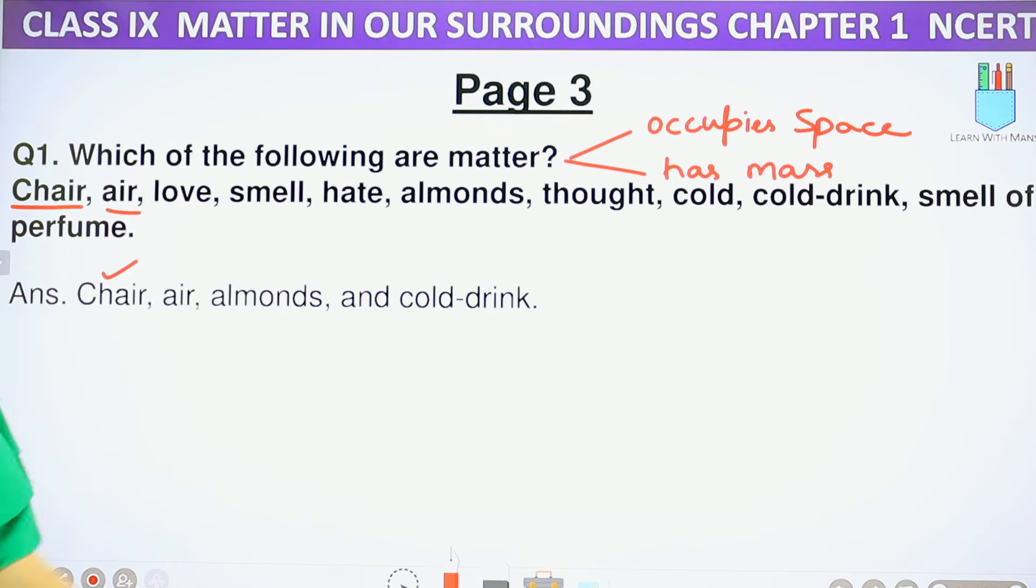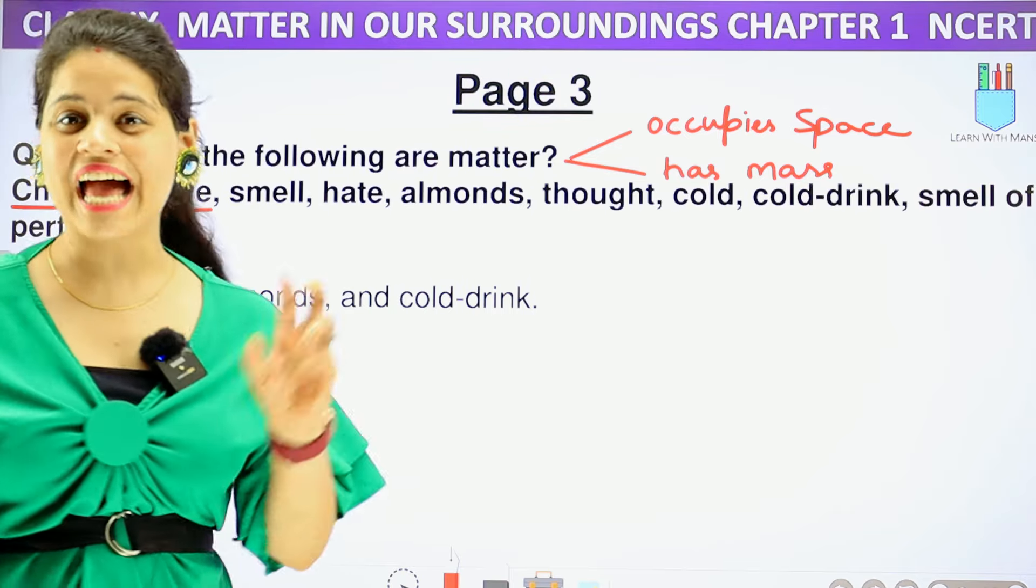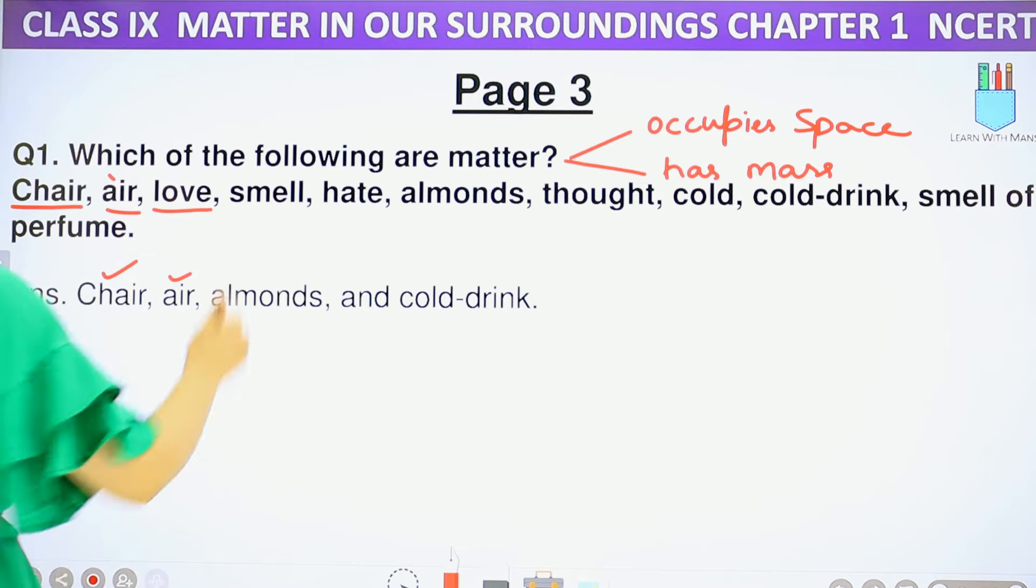Air is not visible, but it occupies a lot of space. So we will click here. Love, love is a feeling. So neither it has mass nor it occupies space. I know you say ma'am, we keep a lot of space, but still it doesn't have mass and it is a feeling. Smell is the same thing, hate is the same thing, feeling.